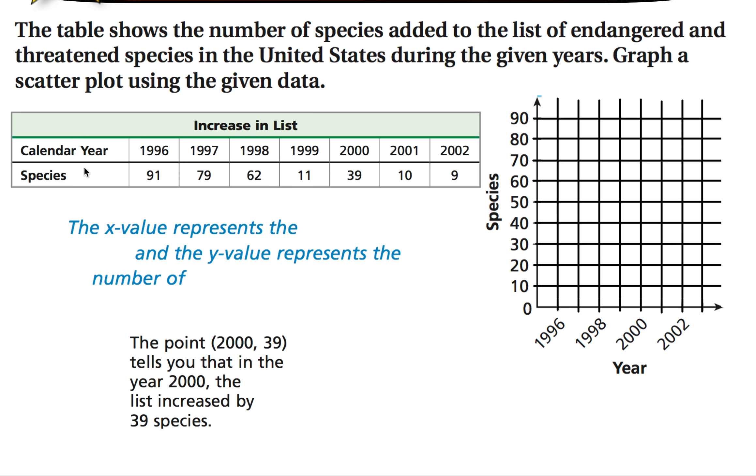So the first thing if you're given a table of data, the first thing you want to do is determine which is the dependent and the independent variable. And almost always time will be an independent variable. It will go on the x-axis and so that's what we've done here. We have our years along the x-axis and our number of species along the y-axis. The x-value represents the calendar year and the y-value represents the number of species that have been added.